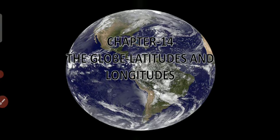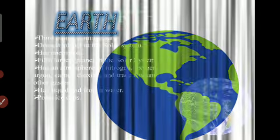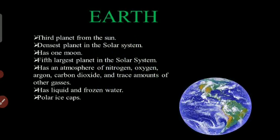The earth is spherical in shape and is slightly flattened at the poles and bulging at the equator. It is the third planet from the sun and has its own natural satellite — the moon. It is also the fifth largest planet in the solar system. It is a unique planet because life exists here, and we can find different types of gases: nitrogen, oxygen, argon, carbon dioxide, etc.